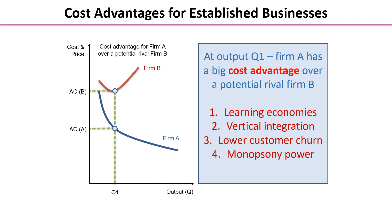Some possible reasons: first of all, learning economies — if you're the firm in the market, you are producing this good or service all the time and the chances are you are getting better and better because you are the one actually doing it. It may be there's been some vertical integration, it may be that you experience lower customer churn, and you may also be able to use your monopsony power to achieve better costs.